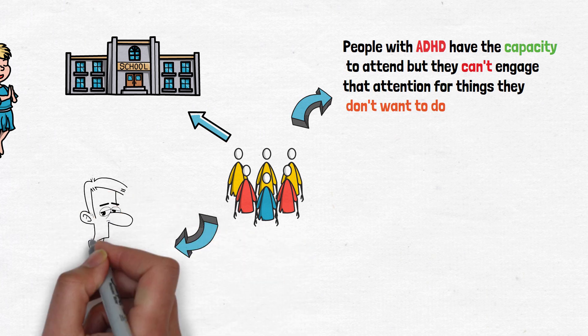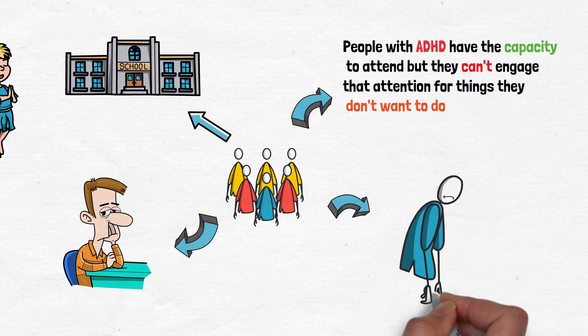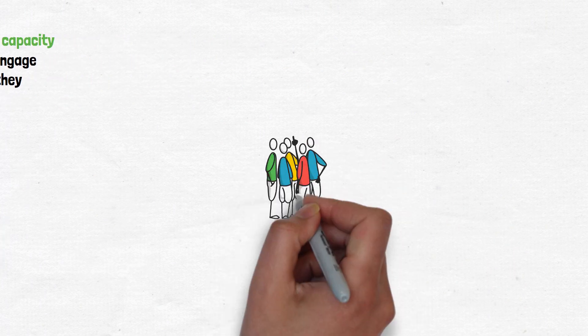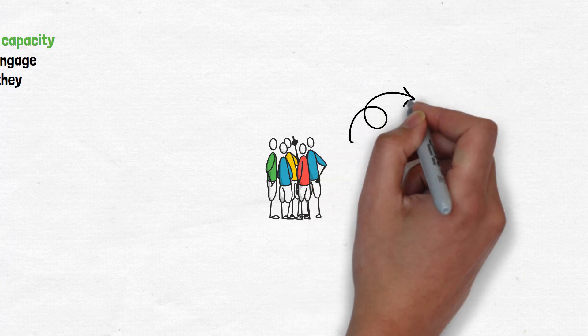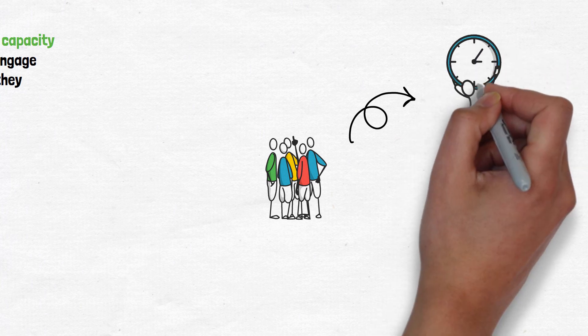Much of our schooling involves doing things that we would prefer not to do and forcing ourselves to attend even though we are not super interested in what we are attending to. There are a couple other things that people with ADHD display quite often. One is challenges with time perception.